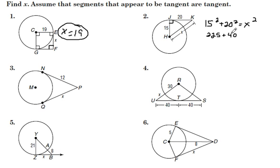So then we have 225 plus 400 is 625. And the square root of both sides, x equals 25.